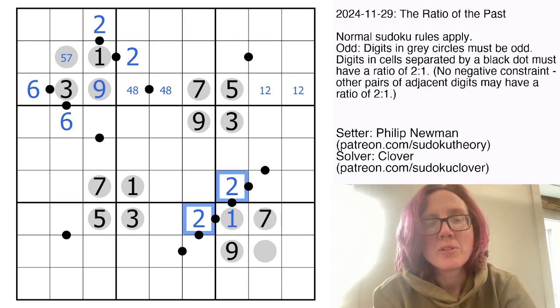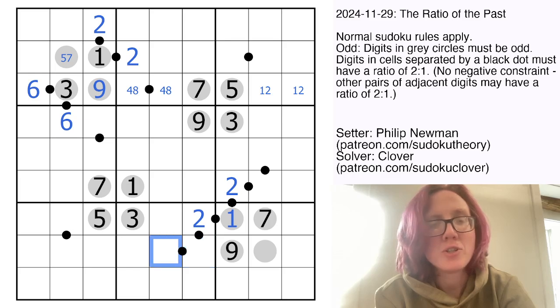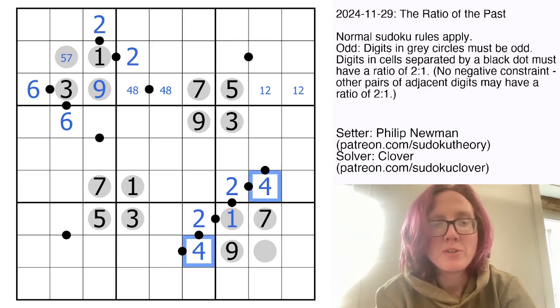Now if we were to do 2 and 1 here, we'd have a problem because then we'd have to put an additional 2 over here. I'd have to go like 2, 1, 2. So those aren't going to be able to be 1. Those will have to be 4, which makes these 8.